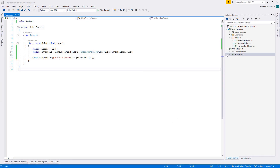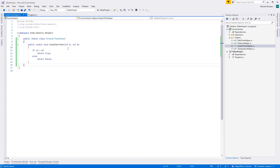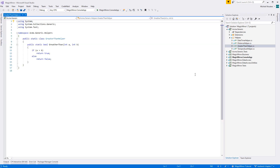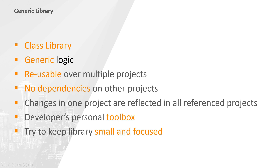For example, if in another solution I were to add a new class and a few methods, then I will also be able to see these methods within the Magic Mirror project. Think of a generic library as your own personal toolbox. Each time when you write a generic method, consider placing it within this library. As you grow as a developer, so shall your toolbox grow alongside you. But don't overdo it — at no point should the generic library become a bloated mess with hundreds of logically unrelated methods. If your library grows too big, consider splitting it up into smaller, more specialized libraries.